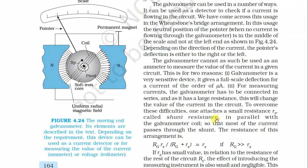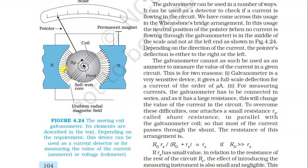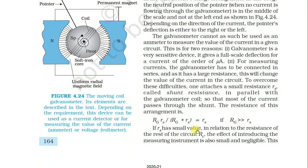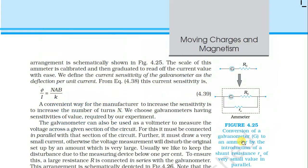To overcome this difficulty, one attaches a small resistance rs called the shunt resistor in parallel with the galvanometer coil, so that most of the current passes through the shunt. The resistance of the arrangement is rg·rs / (rg + rs) ≈ rs, since rg >> rs. If rs is small relative to the rest of the circuit resistance rc, the effect of introducing the measuring instrument is small and negligible.